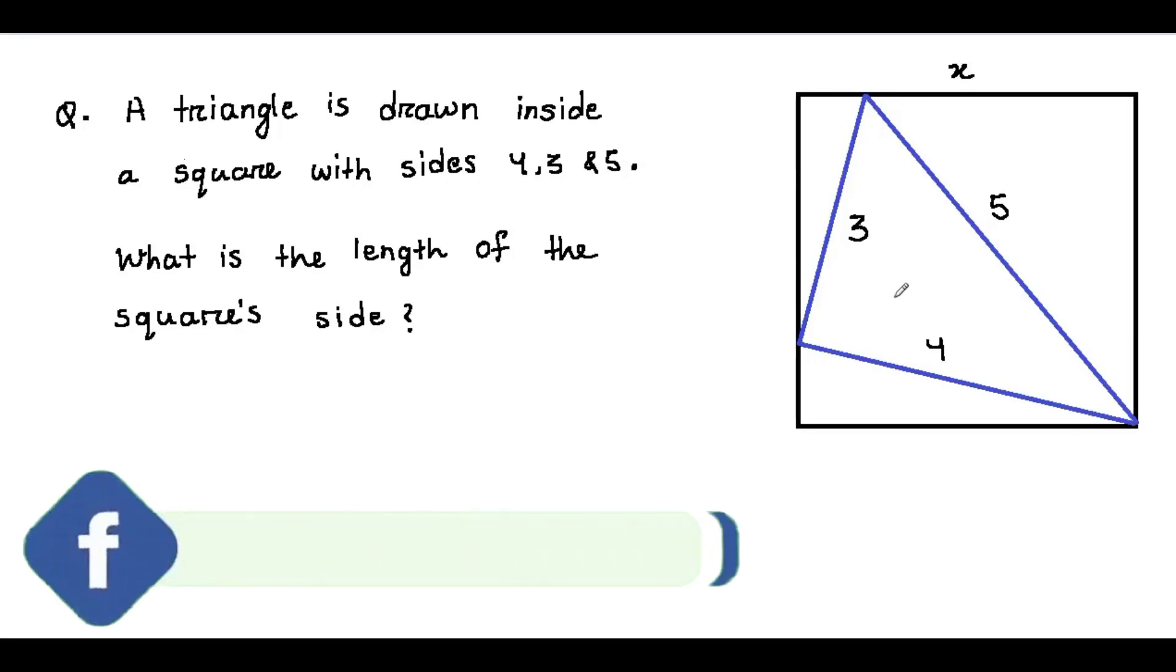Here a square has a triangle inside of it with lengths 3, 4, and 5. What is the length of the square's side? I got this problem from a student. Pause the video if you want to give this problem a try, and when you are ready keep watching to learn how to solve this problem.